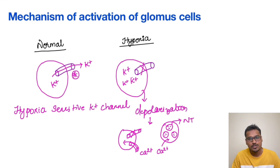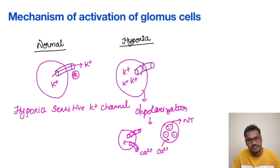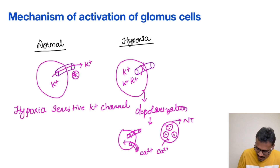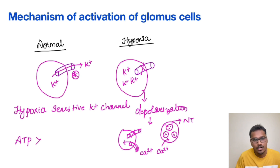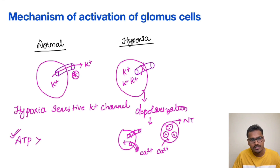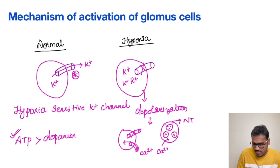In glomus type 1 cells, there are huge numbers of vesicles stored inside with neurotransmitters. When calcium enters, these neurotransmitters fuse with the membrane and are released. Regarding which neurotransmitter is most abundant: previously the answer was dopamine, but recent editions have updated the answer. The primary neurotransmitter released by glomus cells is now ATP, followed by dopamine, then ACh. ATP is the key change and a potential MCQ answer.